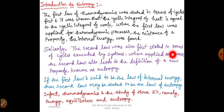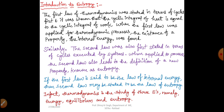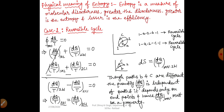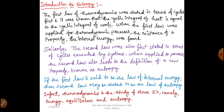Similarly, the second law was also first stated in terms of cycles executed by systems. When applied to processes, the second law also leads to the definition of a new property, and that new property is known as Entropy. If the first law is said to be the law of internal energy, then the second law may be stated to be the law of Entropy. In fact, thermodynamics is basically the study of three E's: energy, equilibrium, and entropy.